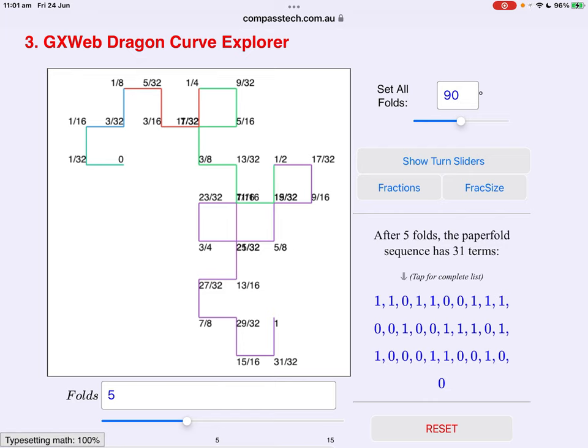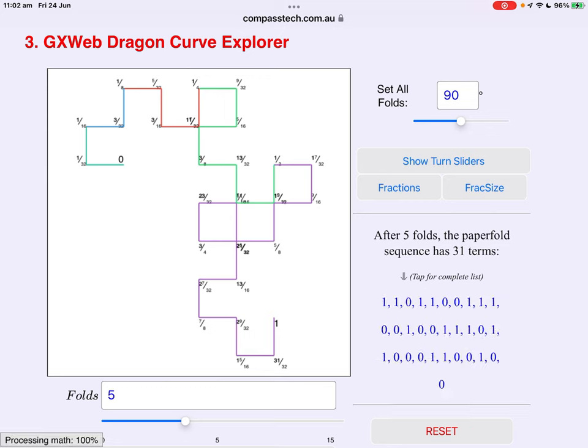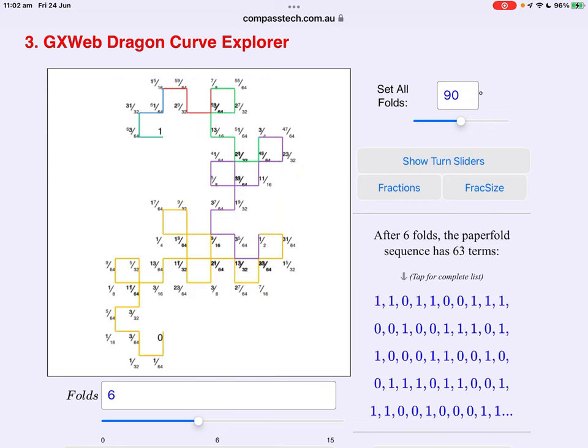Five folds. Fractions are being shown. They can be hidden. They can also be reduced in size for when there are so many. And so on. Six folds. After six folds the paper fold sequence which is the number of folds is now at sixty-three terms.